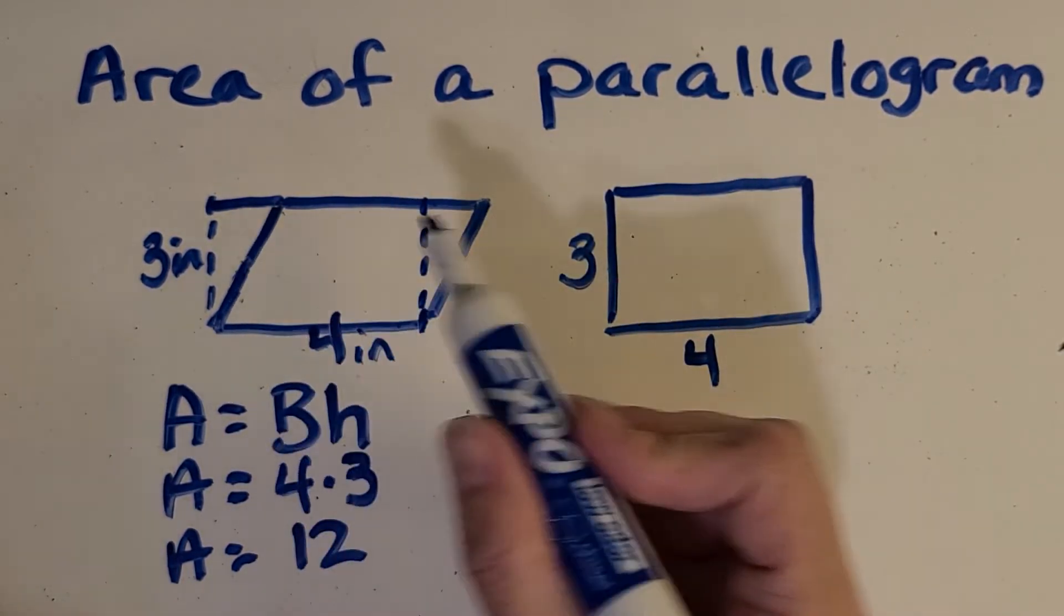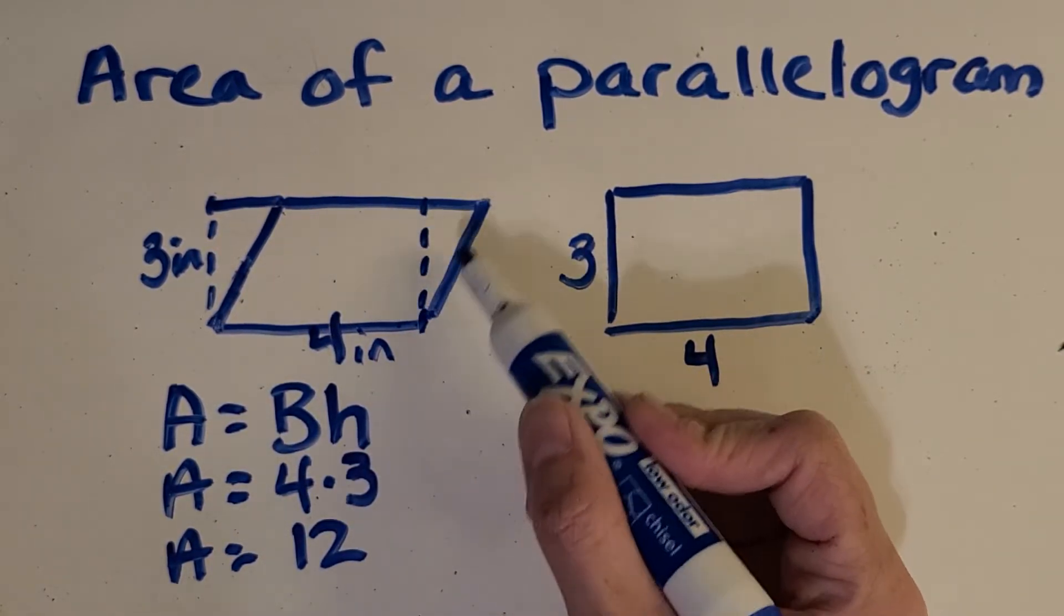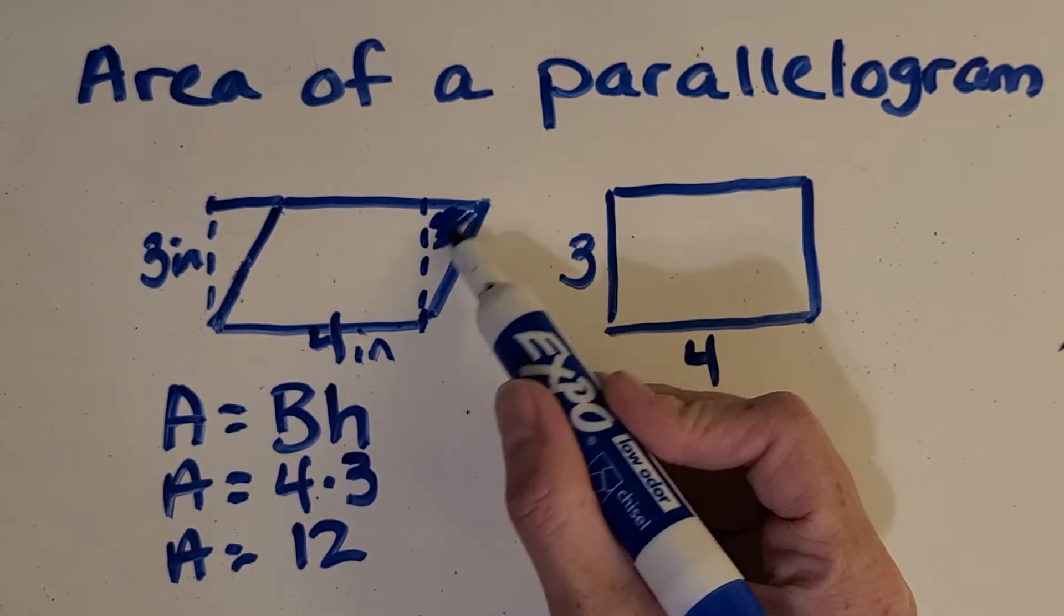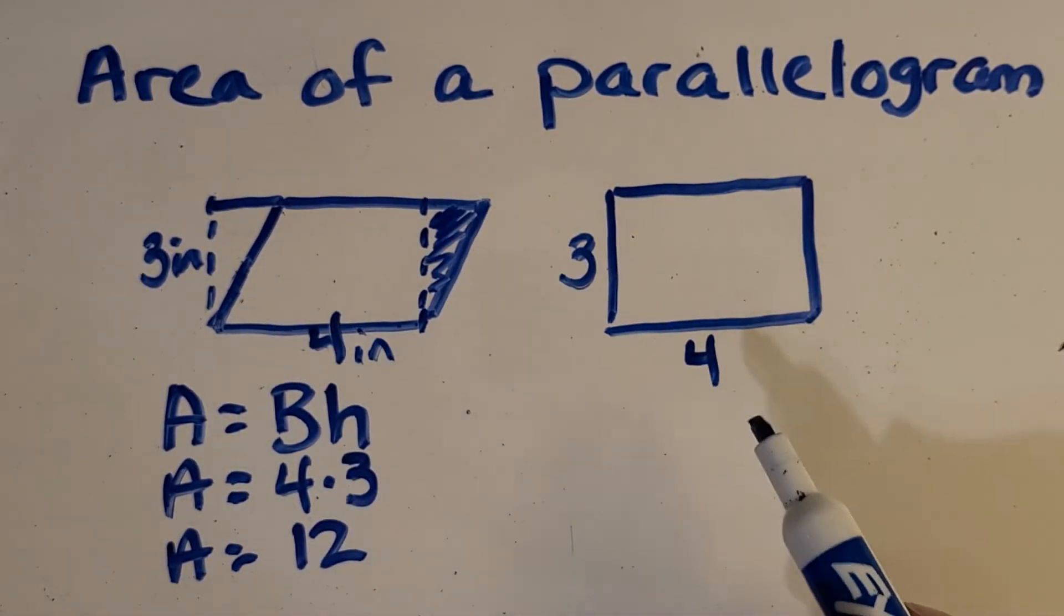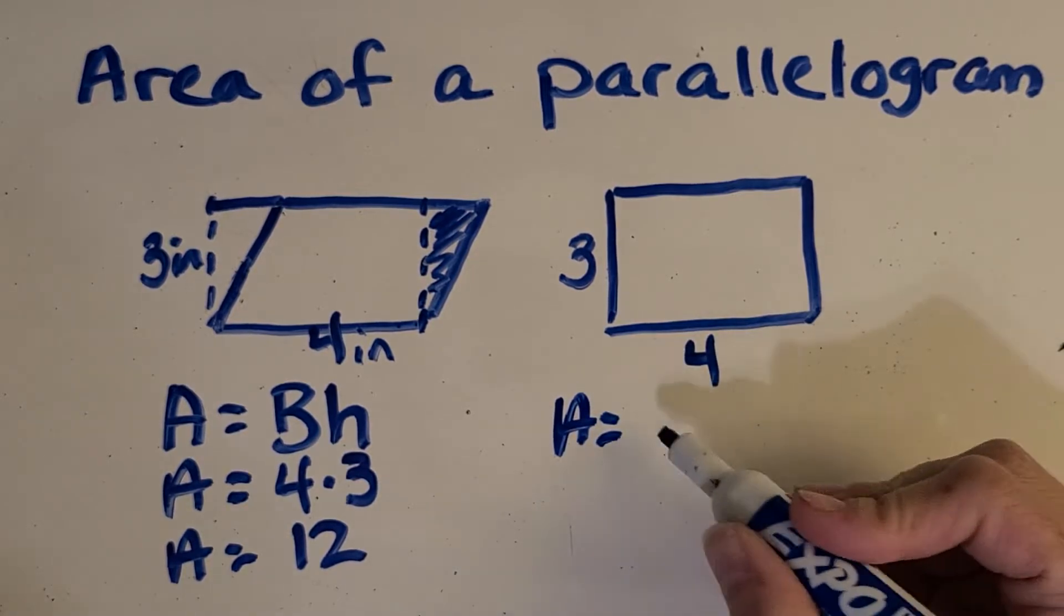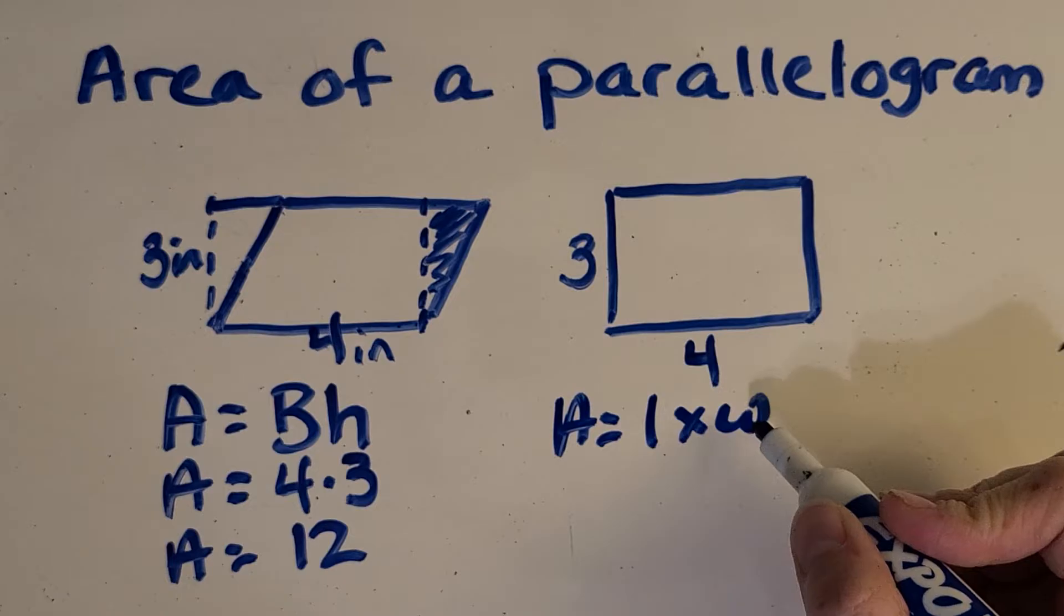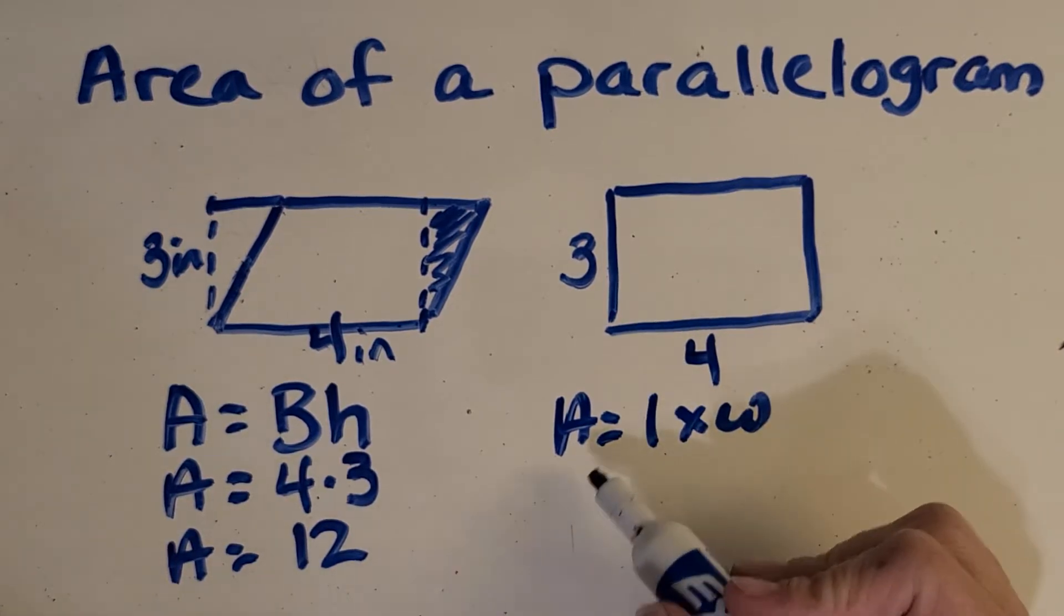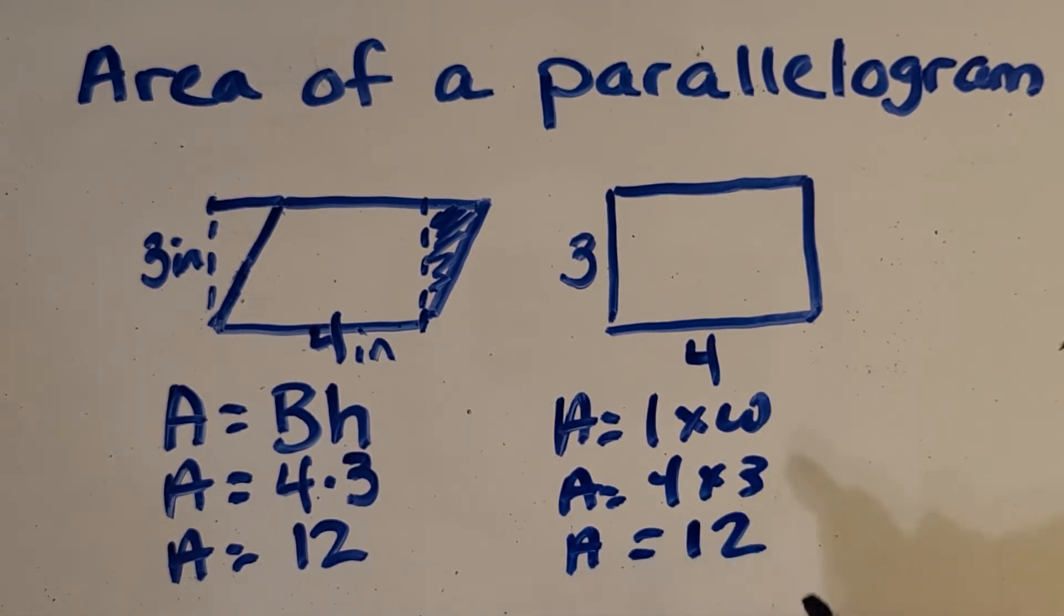Look how it's congruent. Do you see that? So it's kind of like we're taking part of this parallelogram, like this part right here, and moving it over here so that it's just a simple rectangle problem. So what is the area of this rectangle? So length times width is our normal rectangle formula. Yep, four times three, and so we get 12 over here as well.